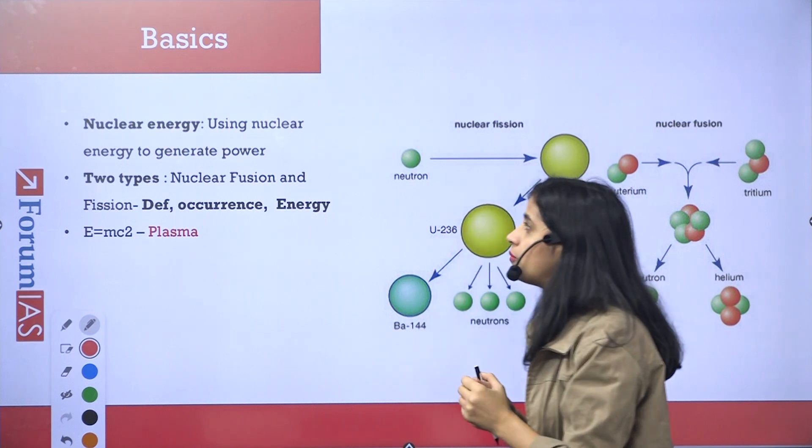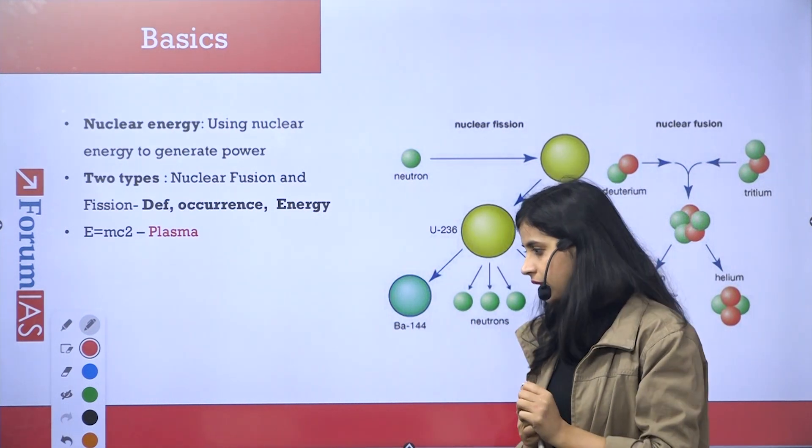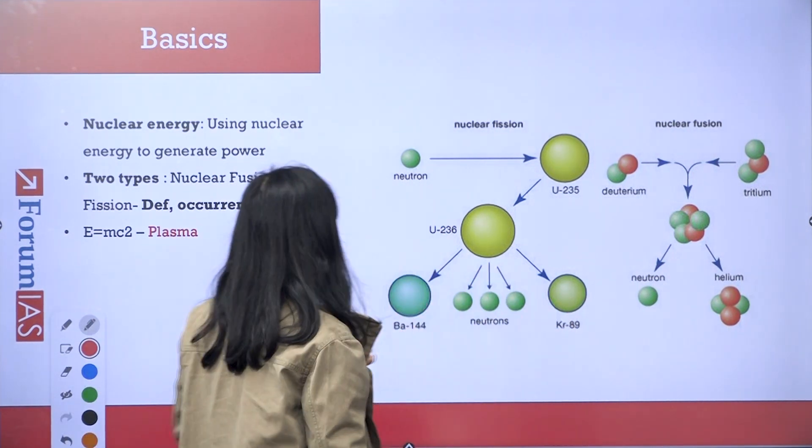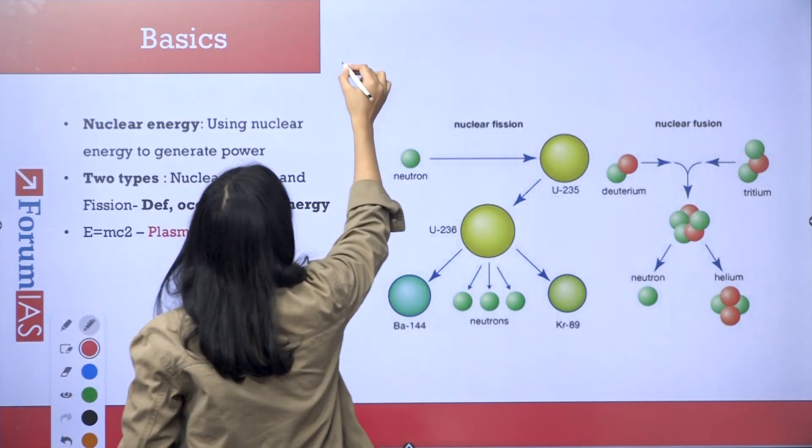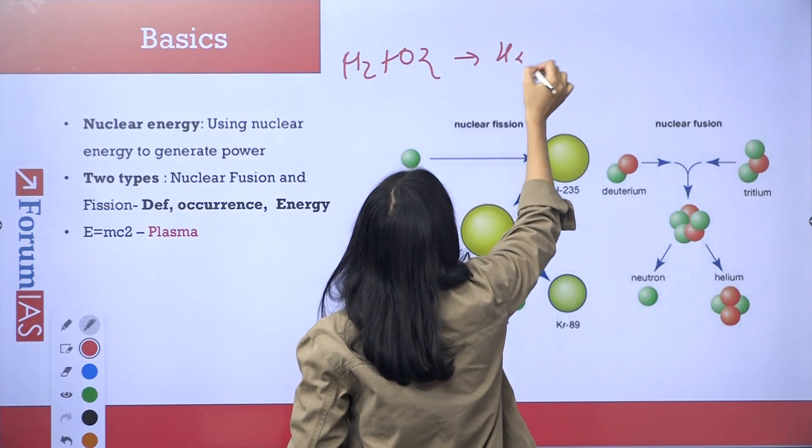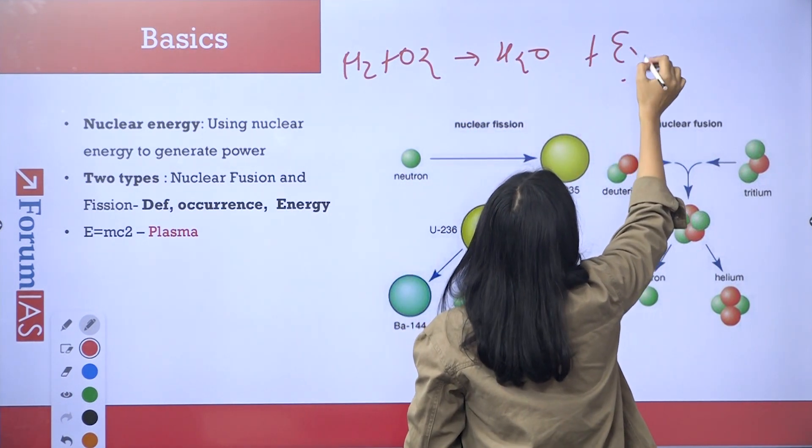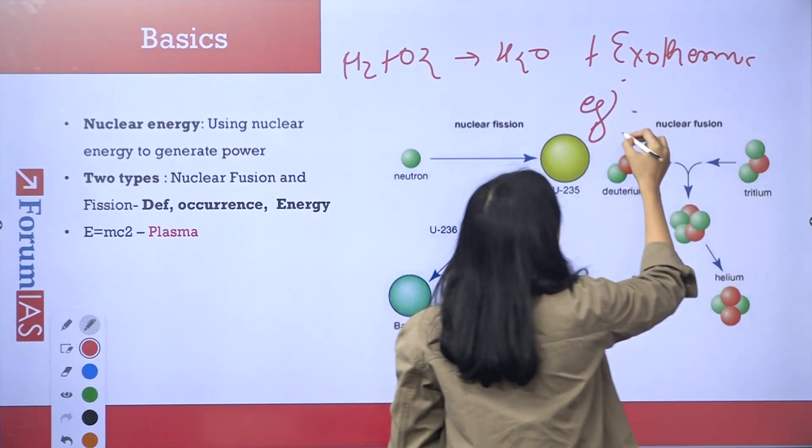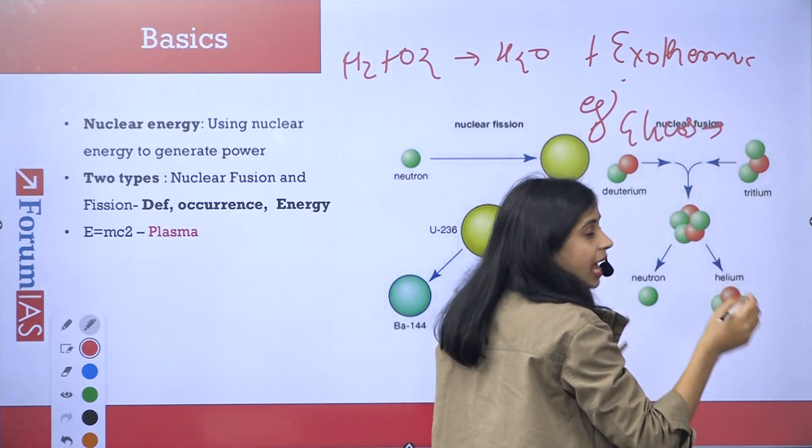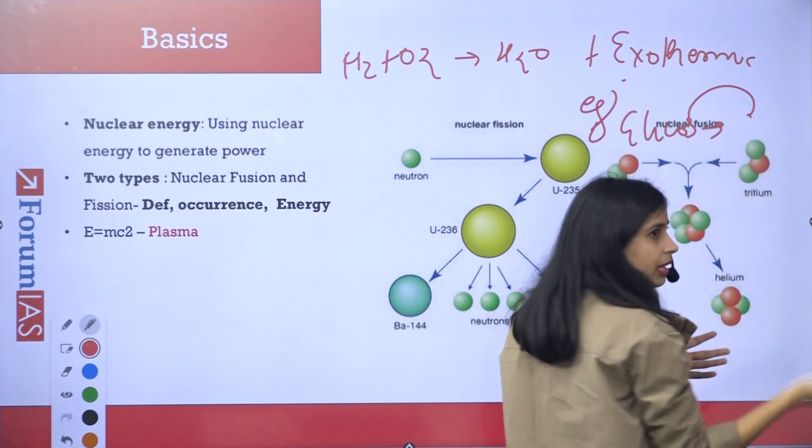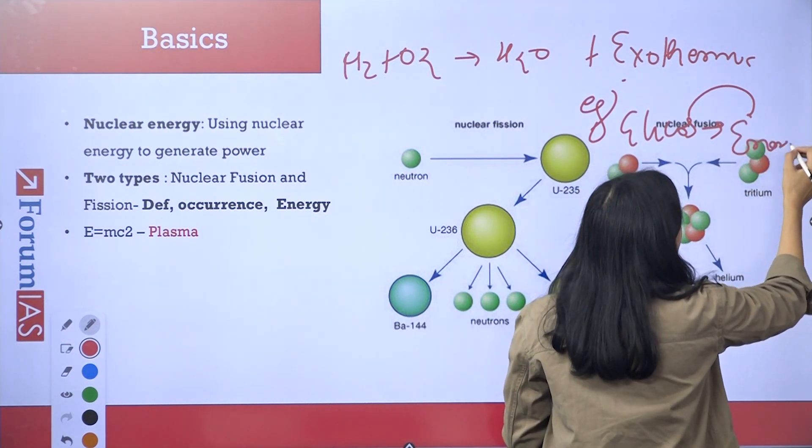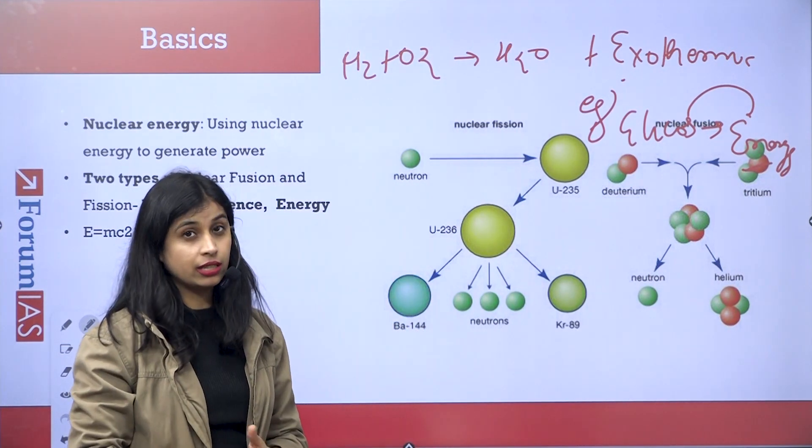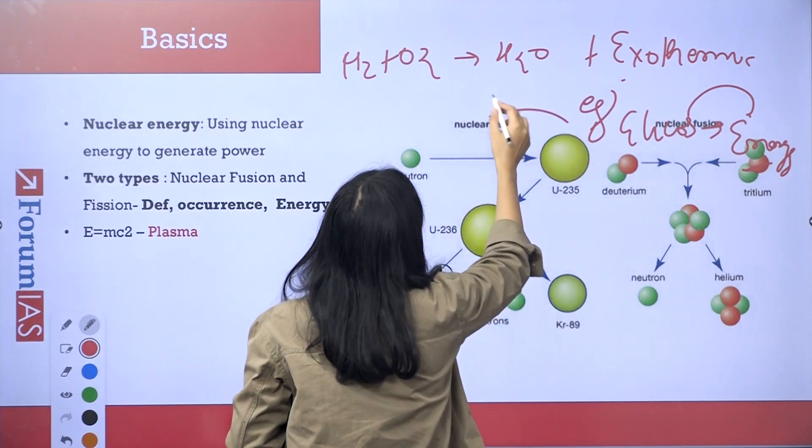Let's move ahead and first understand what is nuclear energy or what is nuclear reaction. You have understood the chemical reaction before and chemical reaction include the reaction between the atoms like H2 plus O2 gives H2O and several of the reactions are exothermic. That means they release enough amount of energy. Example is sugar. If you burn glucose then glucose in reaction with its element produces enough amount of other elements and energy.